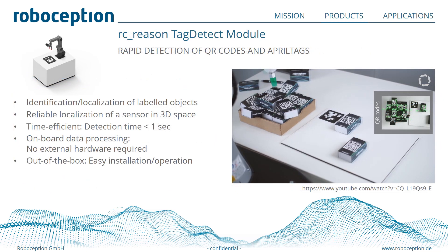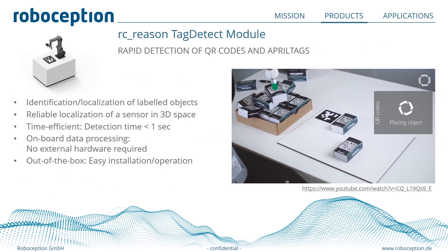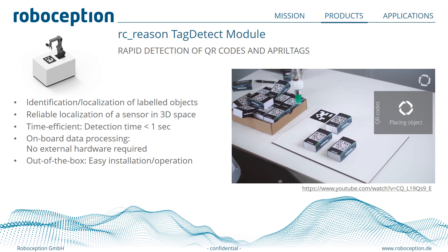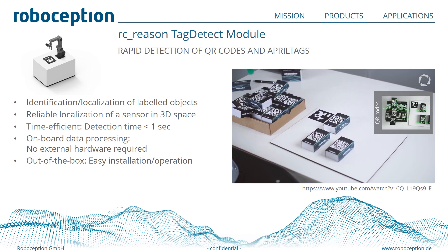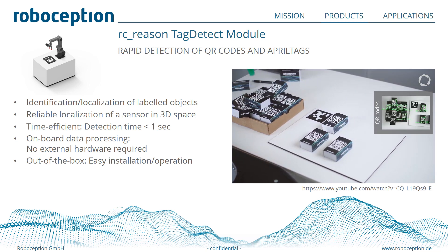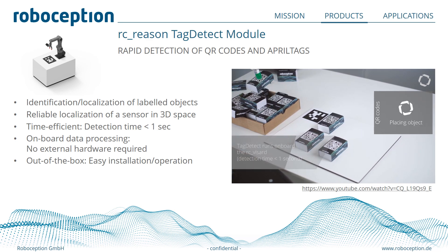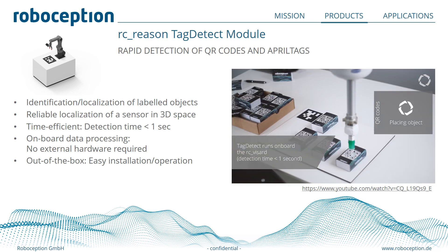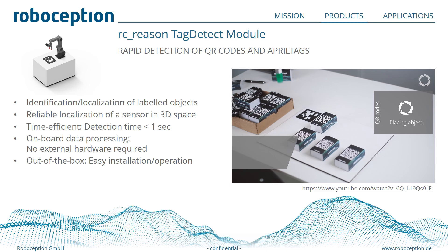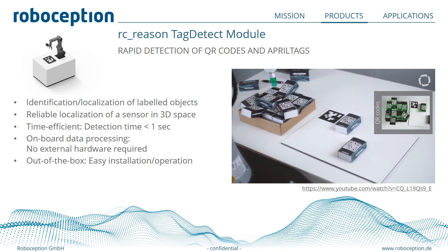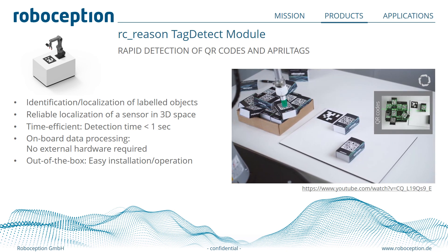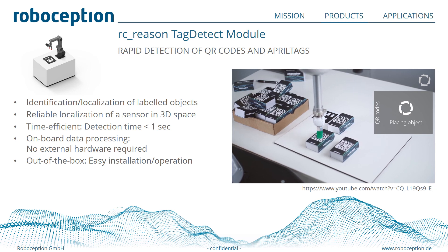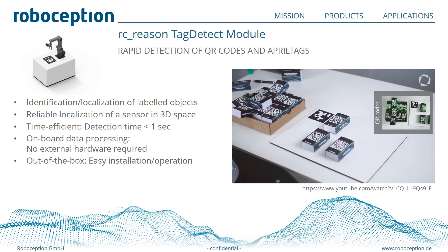Let me introduce the RC Reason Tag Detect module. With this module running onboard the RC Wizard, we can easily detect QR codes and AprilTags. This means we are not only able to determine the exact pose, but also able to detect objects and use them in other applications.